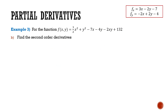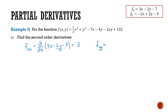Now that we have the first order derivatives, let's find the second order derivatives. For fxx, we take the derivative with respect to x of fx = 3x − 2y − 7. The only x term is 3x, giving fxx = 3. For fyy, we take the derivative with respect to y of fy = −2x + 2y − 4. The only y term is 2y, giving fyy = 2.